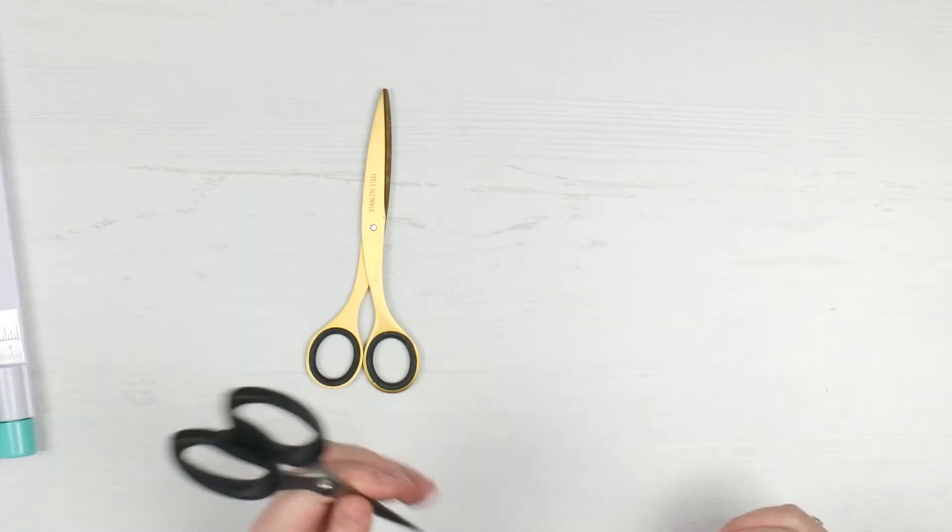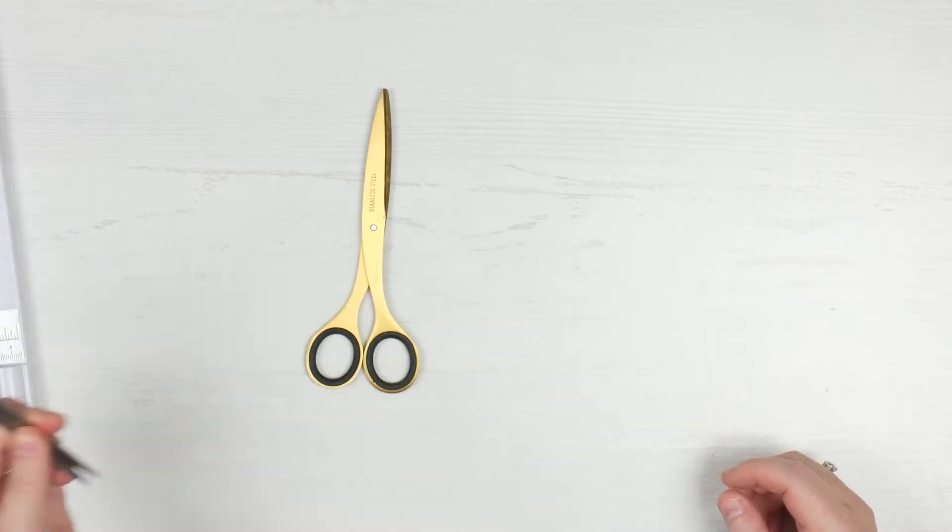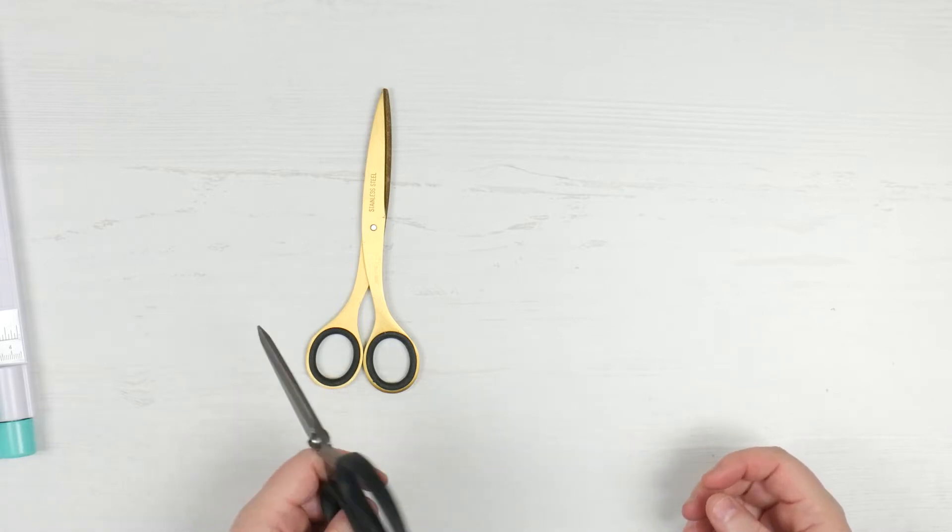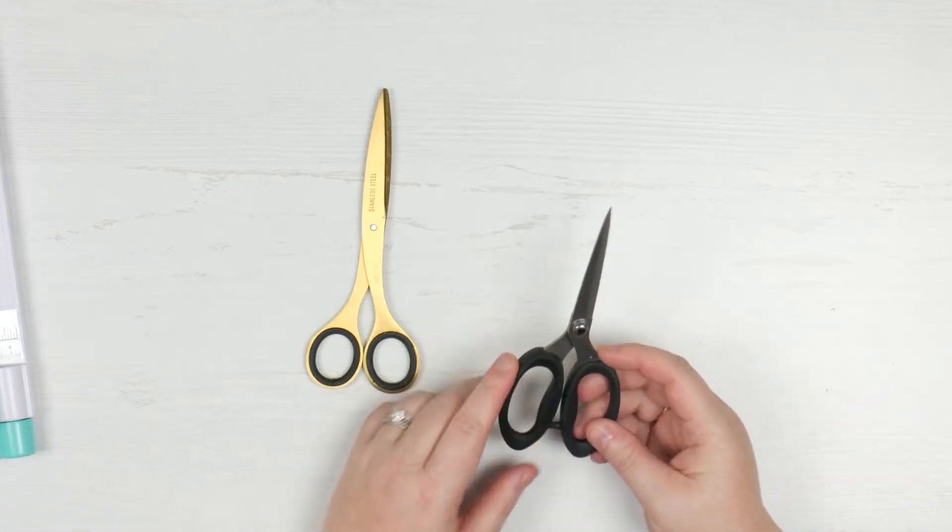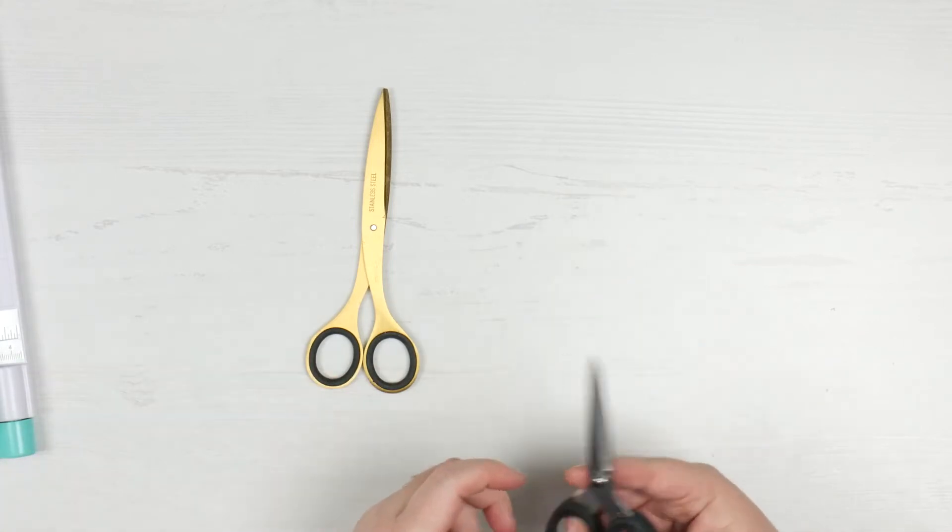Scissors are kind of the basic tool because you can do everything that I'm going to show you using a pair of scissors if you are careful enough. The hardest thing and why I use trimmers is because I can't cut in a straight line.